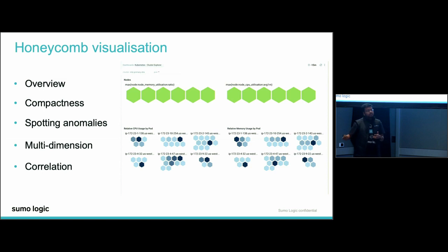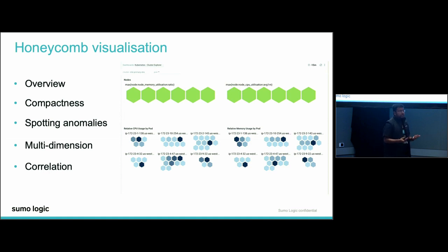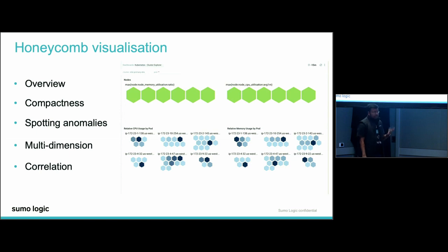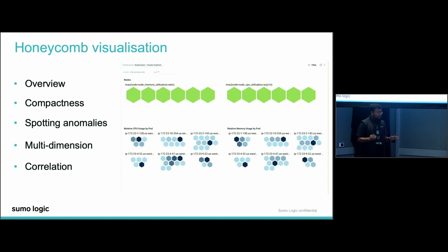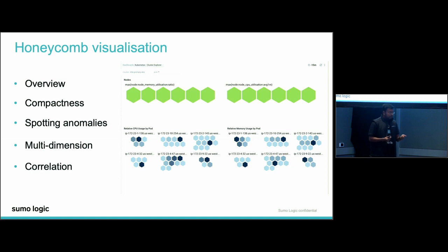If you define something goes red, it shows red. And if you do not specify a certain threshold, it just defaults to a single color, because many times you don't know what the exact thresholds are. What makes honeycomb awesome? It gives you an overview—a compact way of telling your story, giving you all the information about your entire stack in just one panel in a very compacted manner, enabling you to spot anomalies very quickly by color intensity.